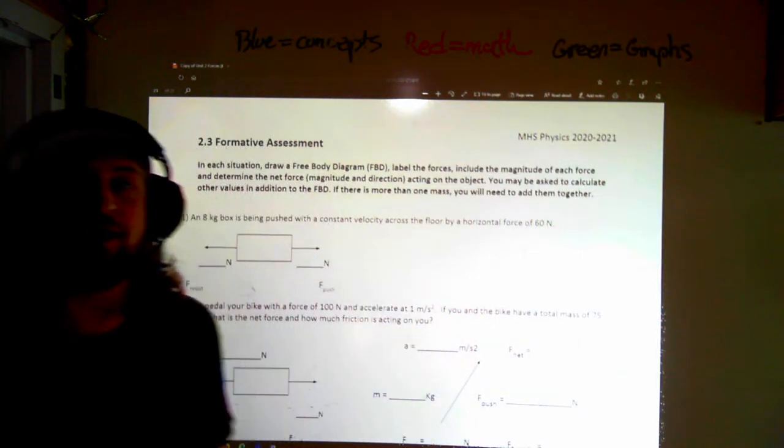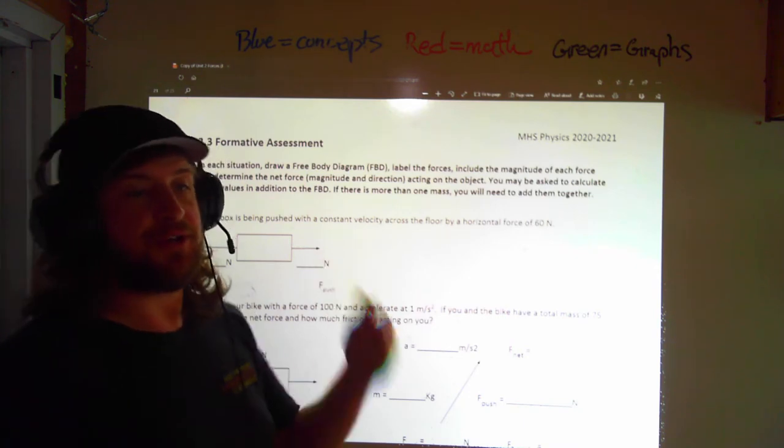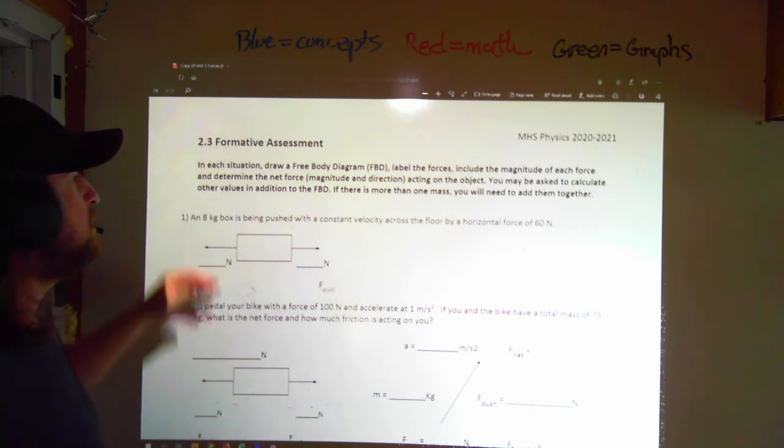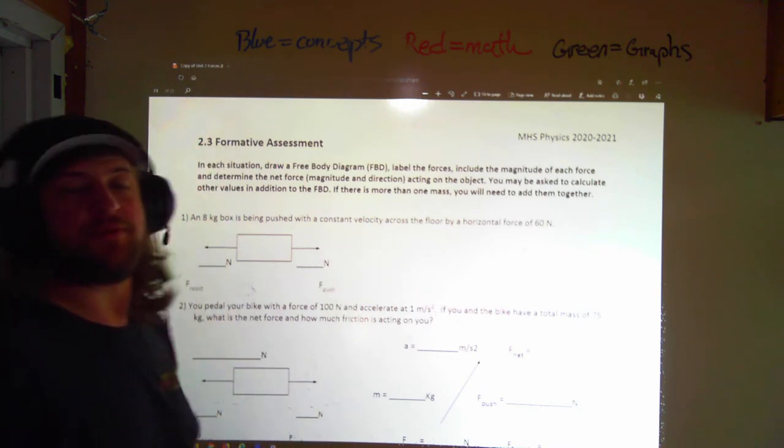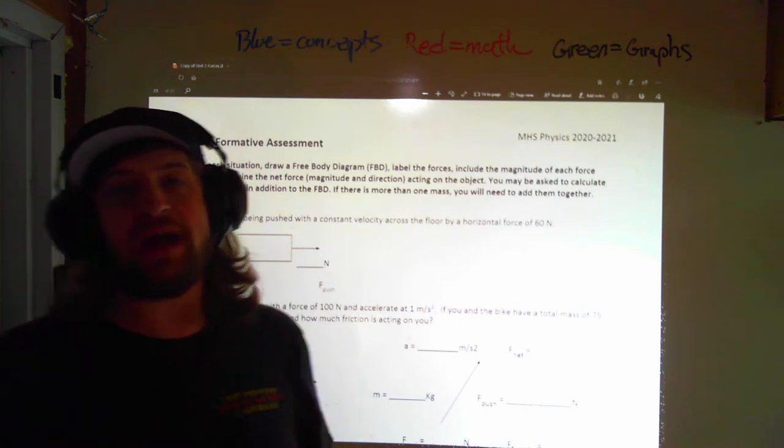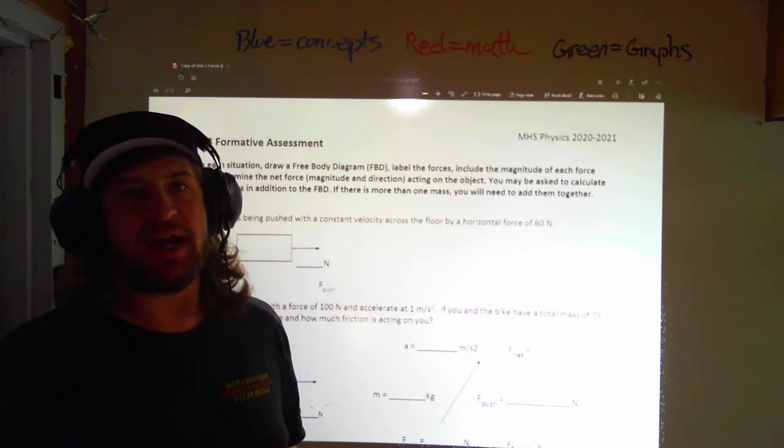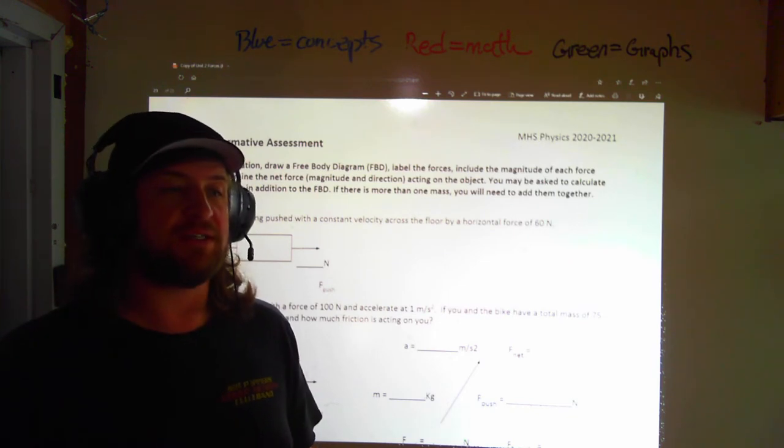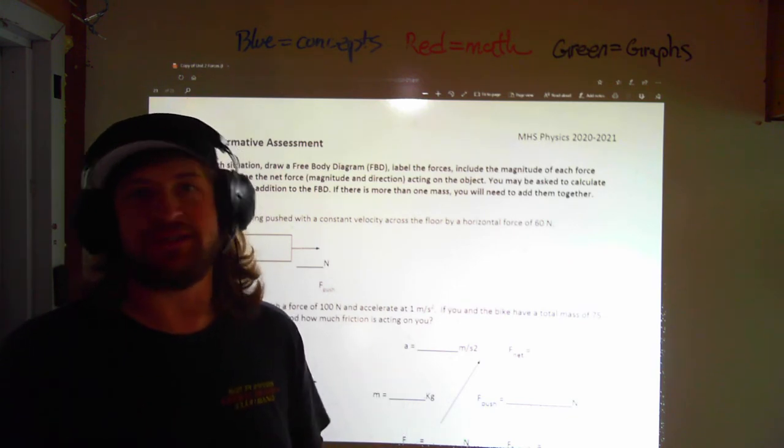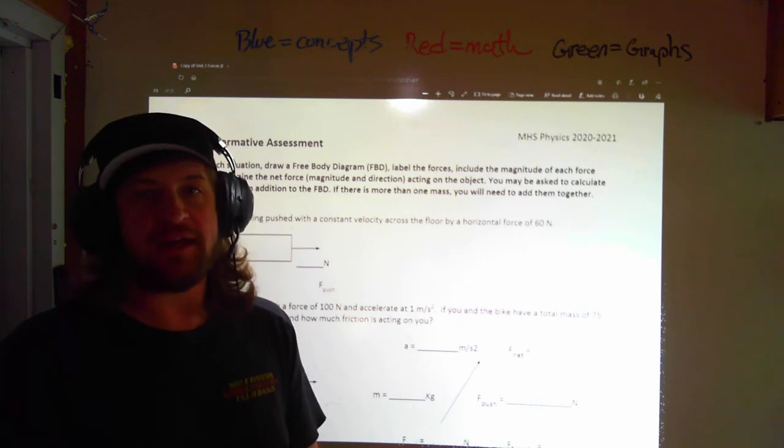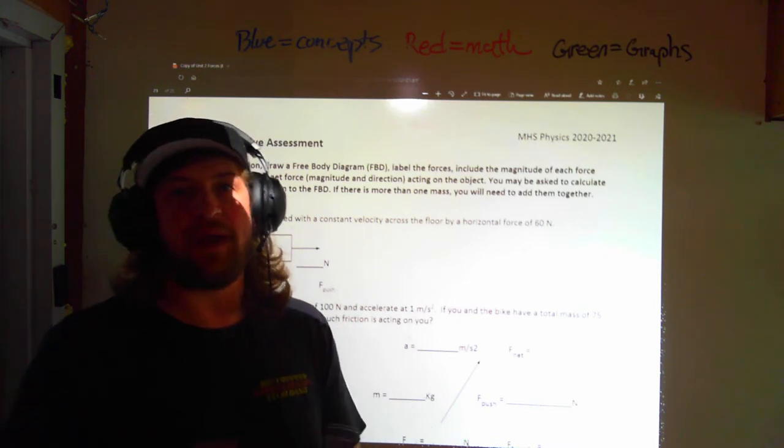Hi folks, I'm Mr. Schrago and welcome to Formative Assessment 2.3. In Formative Assessment 2.3, what we're doing is we are combining our earlier activities where we were doing some free body diagrams along with the ideas from F equals MA and the four equations. In particular, the F net and the F equals MA portion of it.